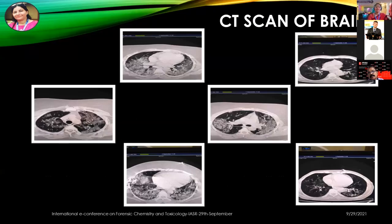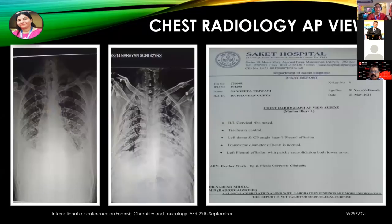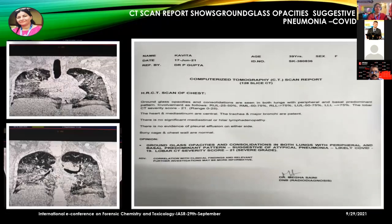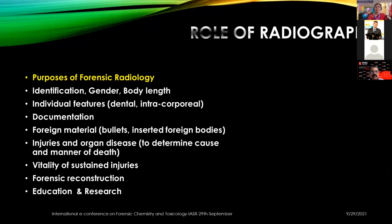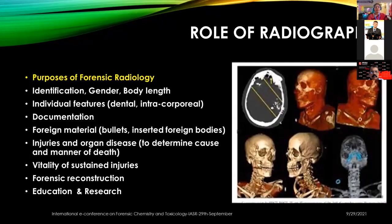Looking at CT scan use in live patients during the COVID pandemic, many patients were diagnosed through chest X-rays and CT scans. Ground glass opacities were seen in the lungs in many cases, suggestive of typical pneumonia likely related to COVID-19. The role of the radiographer is very important and should be connected to the toxicologist in the near future. The purpose of forensic radiology includes identification of bodies, gender, body length, individual features like dental and intracorporeal findings, all properly documented. Foreign materials such as bullets and inserted foreign materials like knives can be identified. Any injuries or diseases that can determine the cause and manner of death can be explained by the radiologist, including the vitality of sustained injuries.